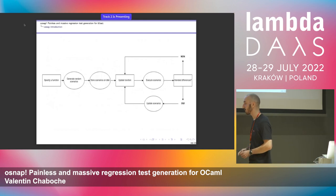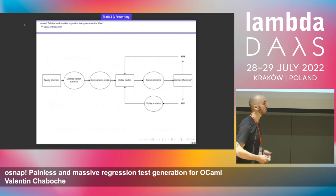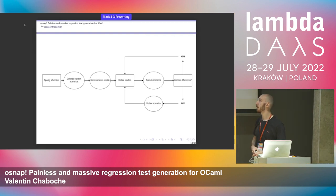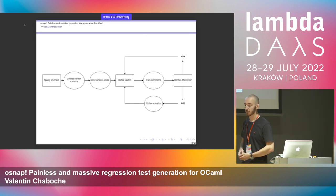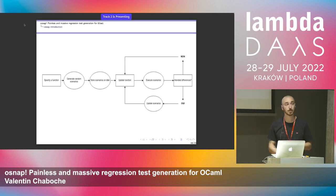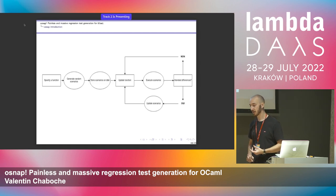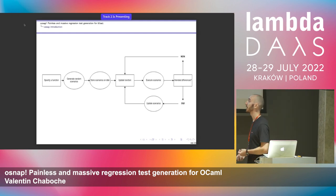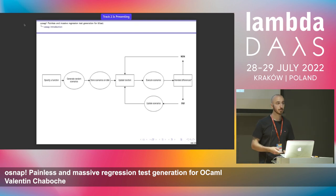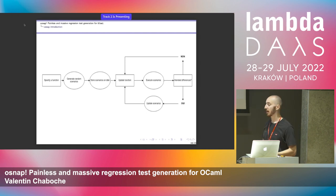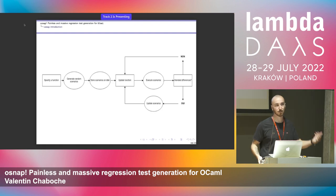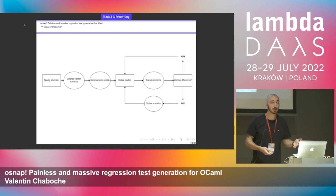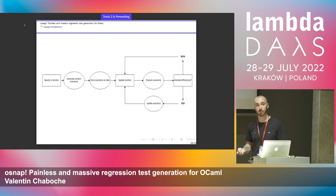For a general OSNAP workflow: first you specify a function by writing generators and output printers — it can be tedious, but it's mostly boilerplate. Then OSNAP internally generates random scenarios, executes them on the function, and stores them on disk. Now you have regression tests and can enter a development loop: every time you update the function, execute the scenarios. If there are differences between expected and actual outputs, ask yourself if they are intended. If not, it's a bug — update the function. If the outputs legitimately change, you can update only the expected outputs and keep the inputs forever.